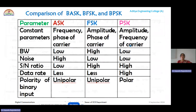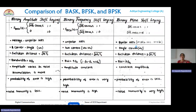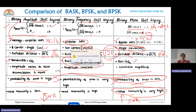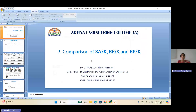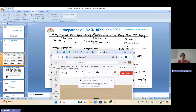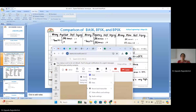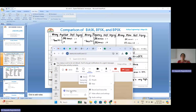This concludes the comparison of the three types of keying techniques. In the next module, we will continue with the probability of error calculations for ASK, FSK, and PSK, as well as QPSK. Thank you for listening.